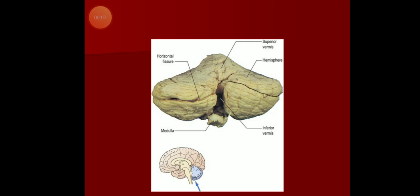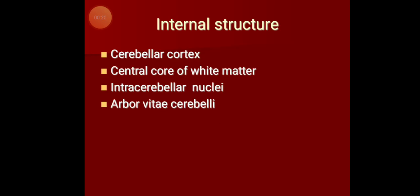Good morning. Now we come to the internal structure of the cerebellum. You know the external features — now we take a section of the cerebellum to see how it looks internally. When you take a section, you see it has an outer cerebellar cortex, which is mainly gray matter.